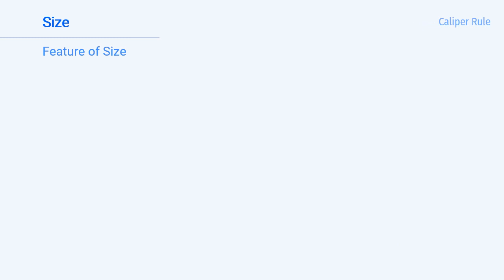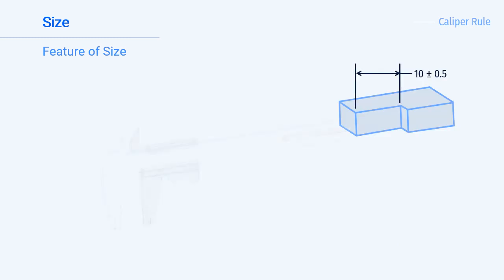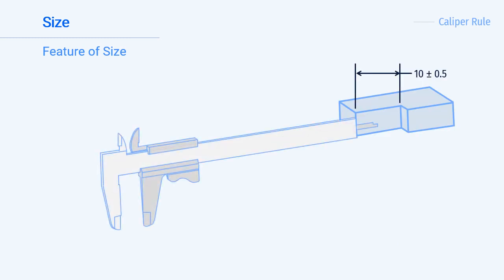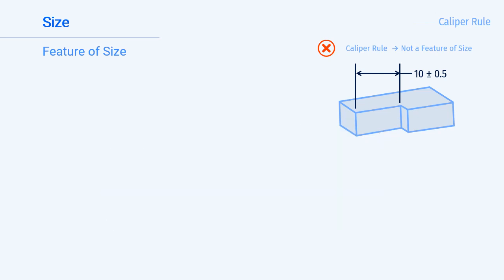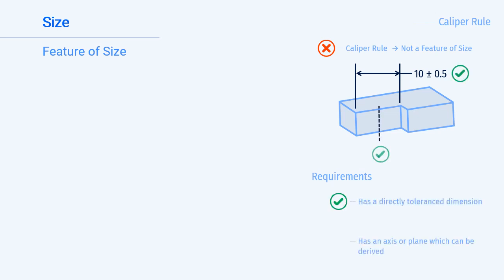Last, let's check the step down in the block. The feature is a step down of two surfaces, and to measure it with a vernier caliper we would use the rod to measure the depth. So the caliper rule says that this is not a feature of size. Double checking with our requirements: the feature must be directly toleranced and it must have an axis or a plane that can be repeatably derived, but it must also have opposing points — which this feature does not.